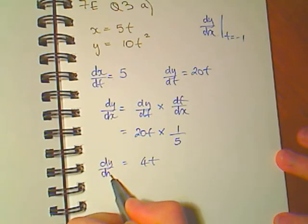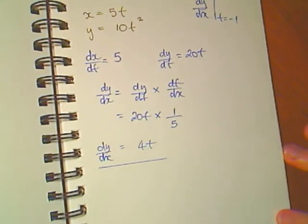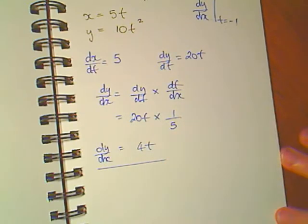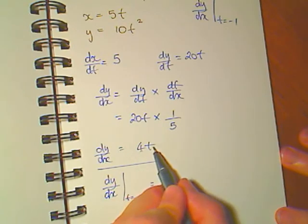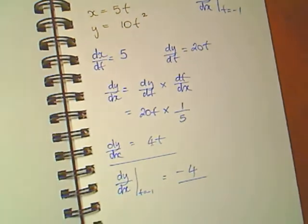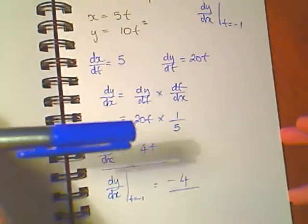This is my derivative. It's 4t. We're asked to evaluate that when t equals minus 1. 4 times minus 1 is minus 4. That's our answer.